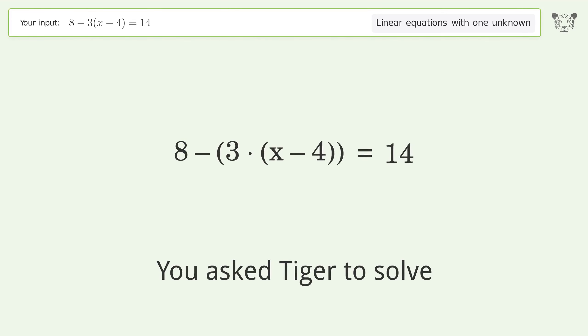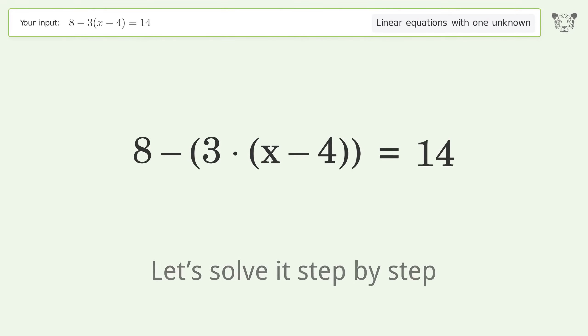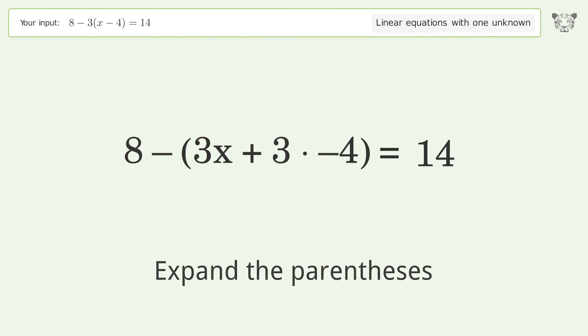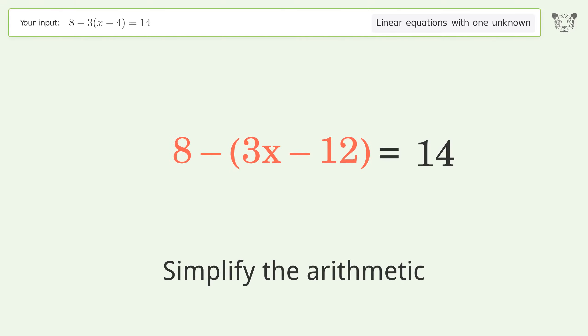You asked Tiger to solve this. This deals with linear equations with one unknown. The final result is x equals 2. Let's solve it step by step. Simplify the expression, expand the parentheses, simplify the arithmetic.